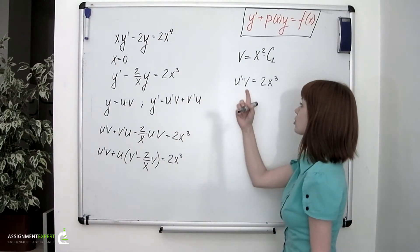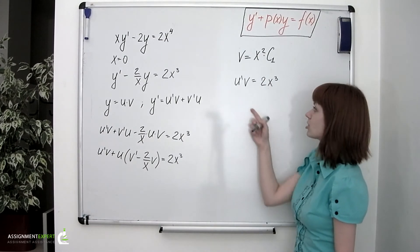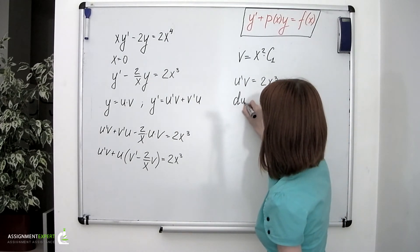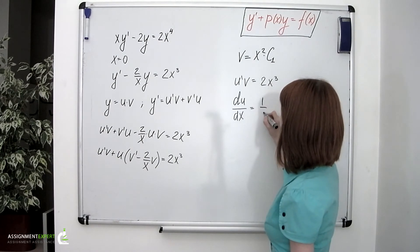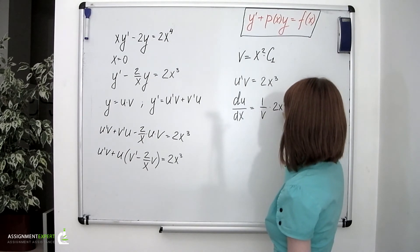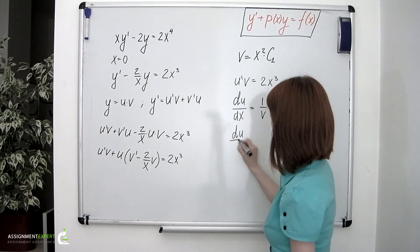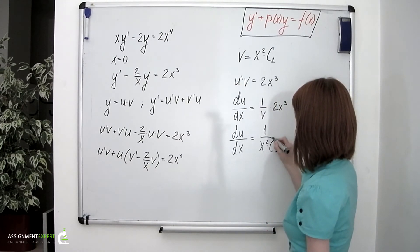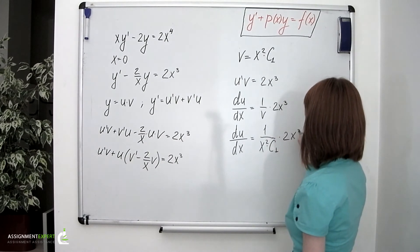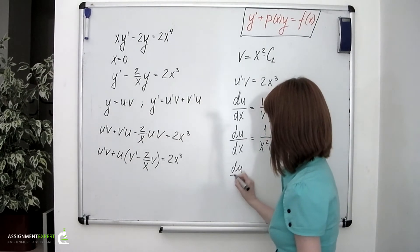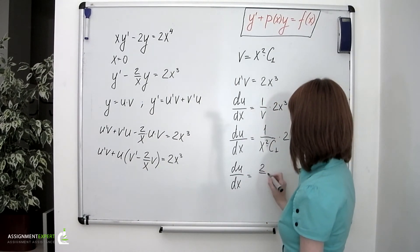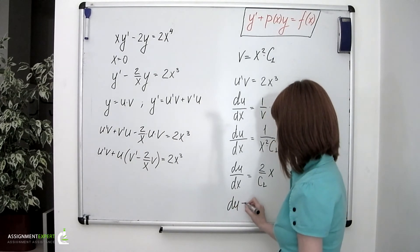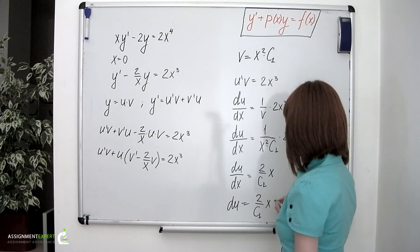And we've already found the expression for the v function, so we can simply substitute it into this equation and solve it for u. So we have u prime, which is the same as du over dx equals 1 over v times 2x cubed. du over dx equals 1 over x squared times the constant times 2x cubed. du over dx equals 2 over the constant times x. du equals 2 over c sub 1 x dx.